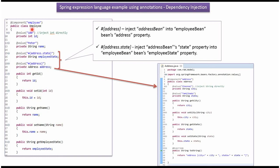Here I have defined the class Employee and in the Employee class I have applied the @Component annotation. It has four properties: id, name, employeeState, and address. The id value will be injected as 100, name value will be injected as Peter, employeeState value will be injected as Tamil Nadu, and the address bean will be injected to the address property. Here I have used Spring Expression Language for these injections.